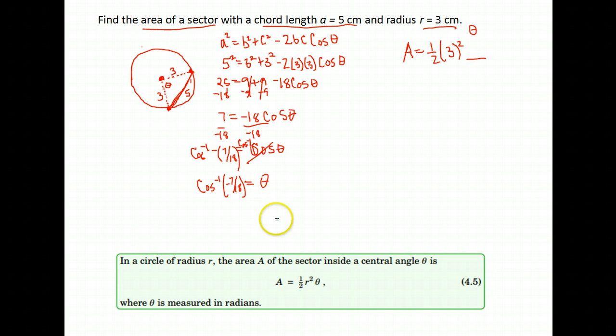Because remember, to find the area of a sector, we have to have the angle theta in radians. It's easier just to find it in radian mode, rather than find the degree measure, and then change it to radians. So, make sure your calculator is in radian mode, and do the inverse cosine of negative 7 eighteenths. You should get about 1.97 radians for your answer.